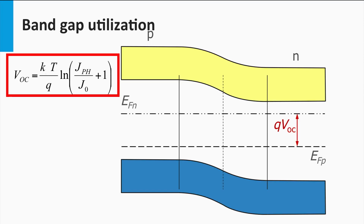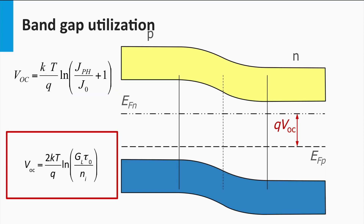The open-circuit voltage depends on the irradiance and the diode leakage current in the dark. This equation can be expressed in terms of the generation rate g, lifetime tau of the minority charge carriers, and the intrinsic density of the charge carriers of the semiconductor material. As the derivation of this equation is out of the scope of this lecture, we have included it as an exercise in this week's homework.